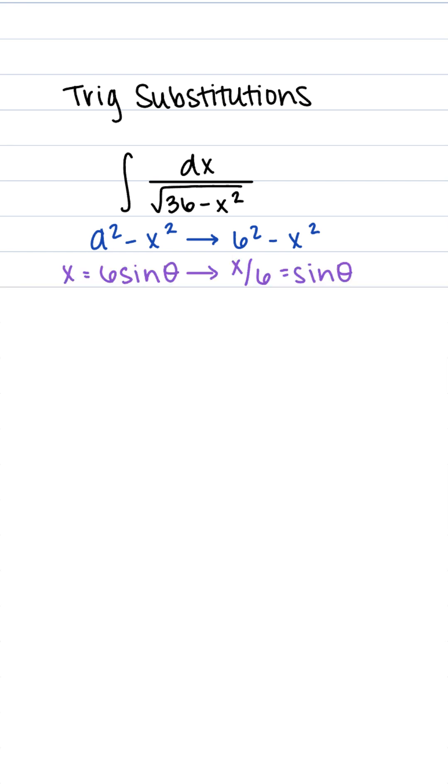So we're going to use a substitution x equals 6 sine theta, which we can rewrite as x divided by 6 in order to see the triangle really well. This is going to be opposite over hypotenuse, and when we solve for the remaining side, we get the square root of 6 squared minus x squared.